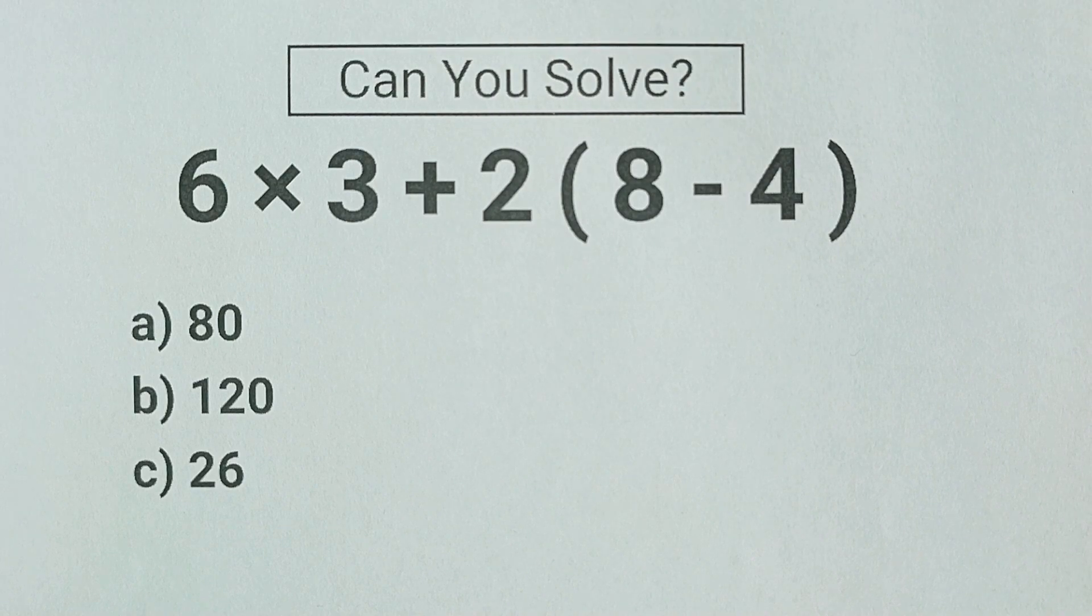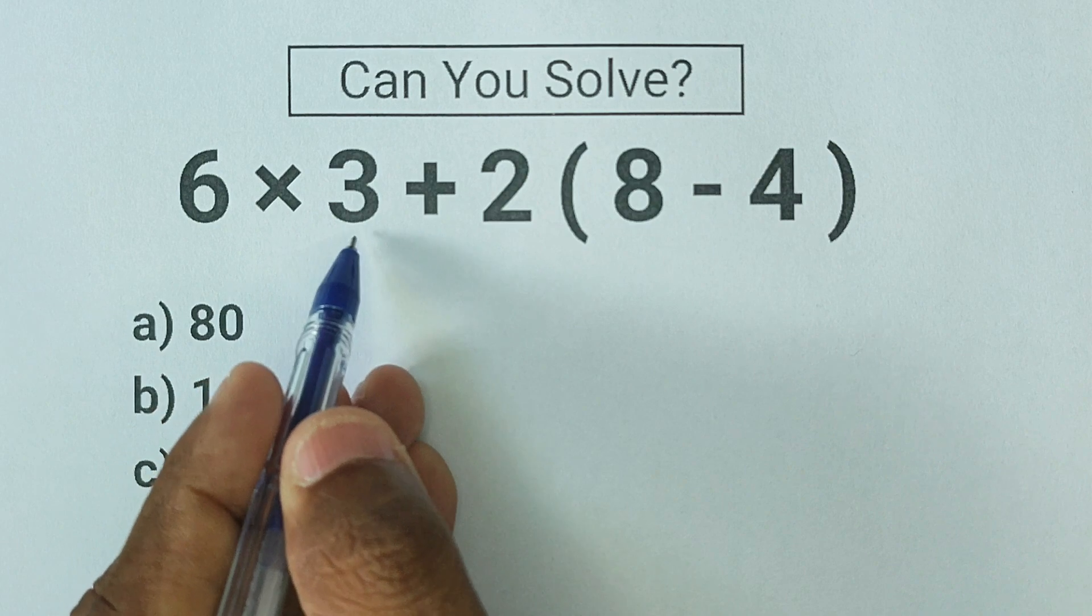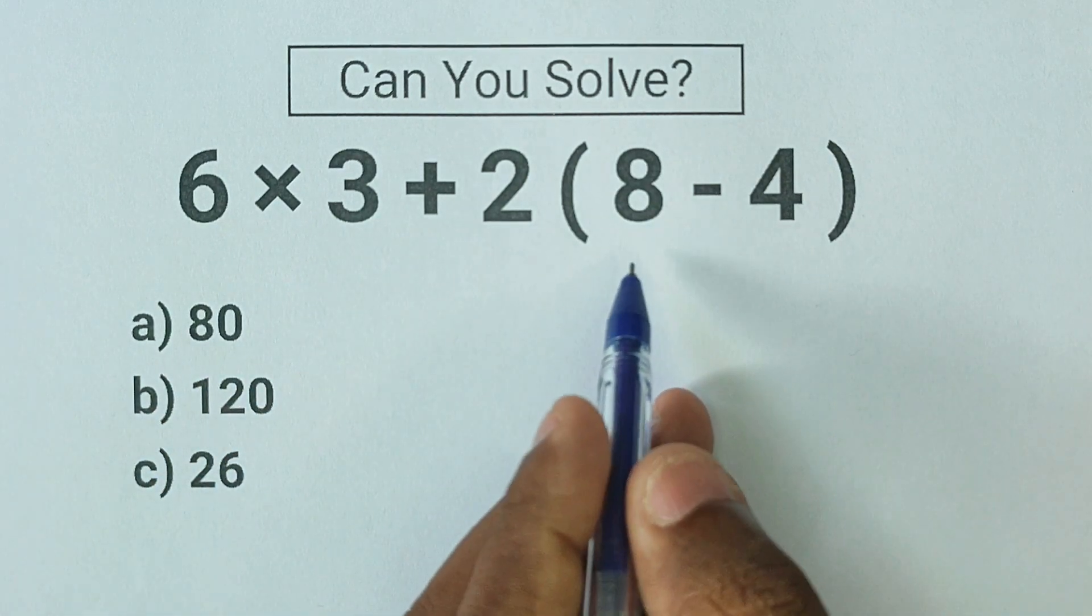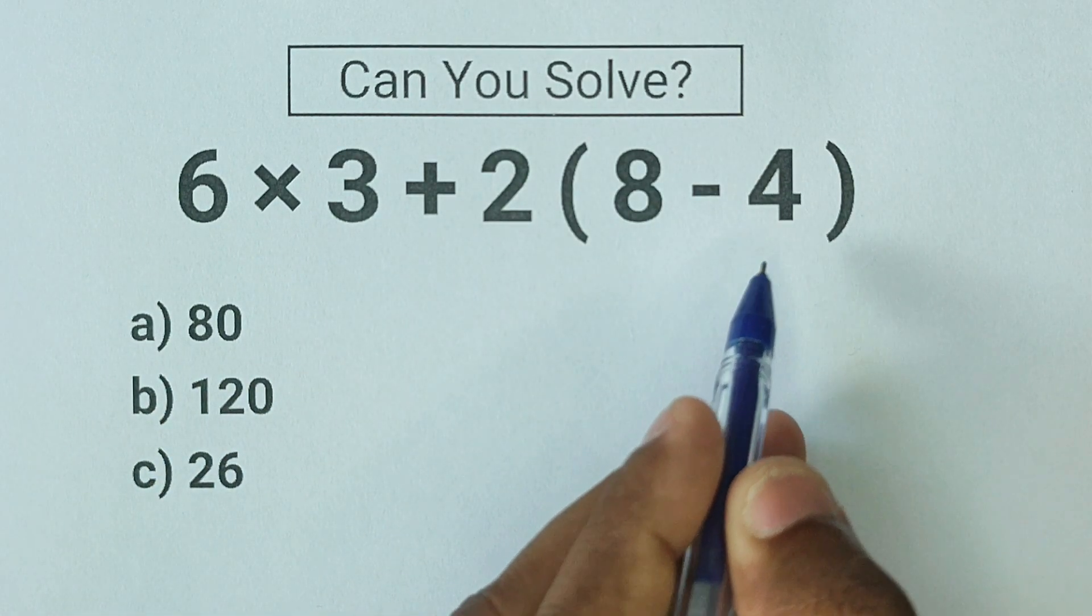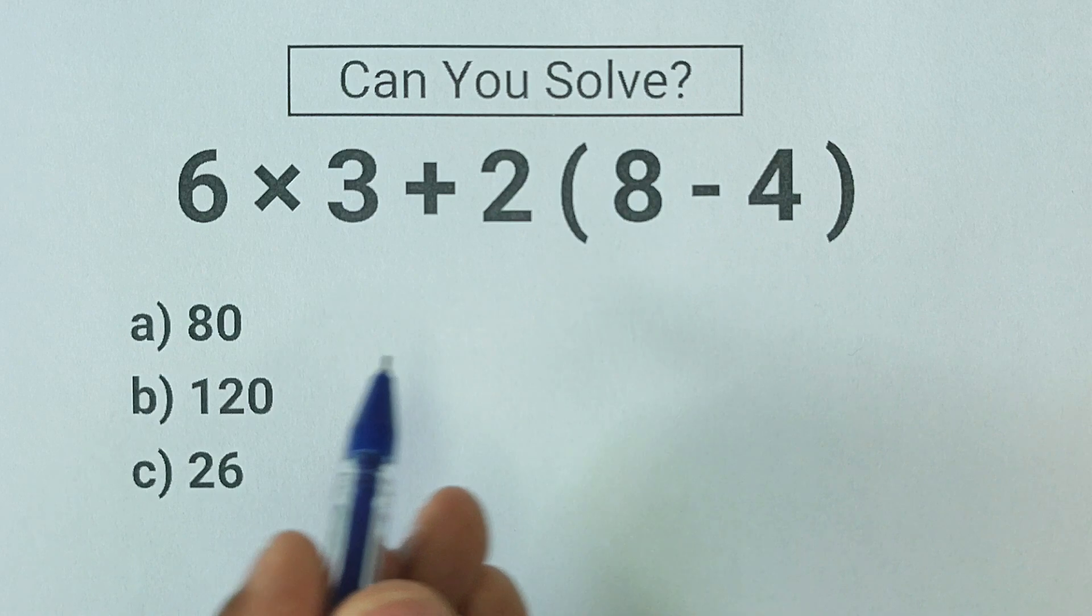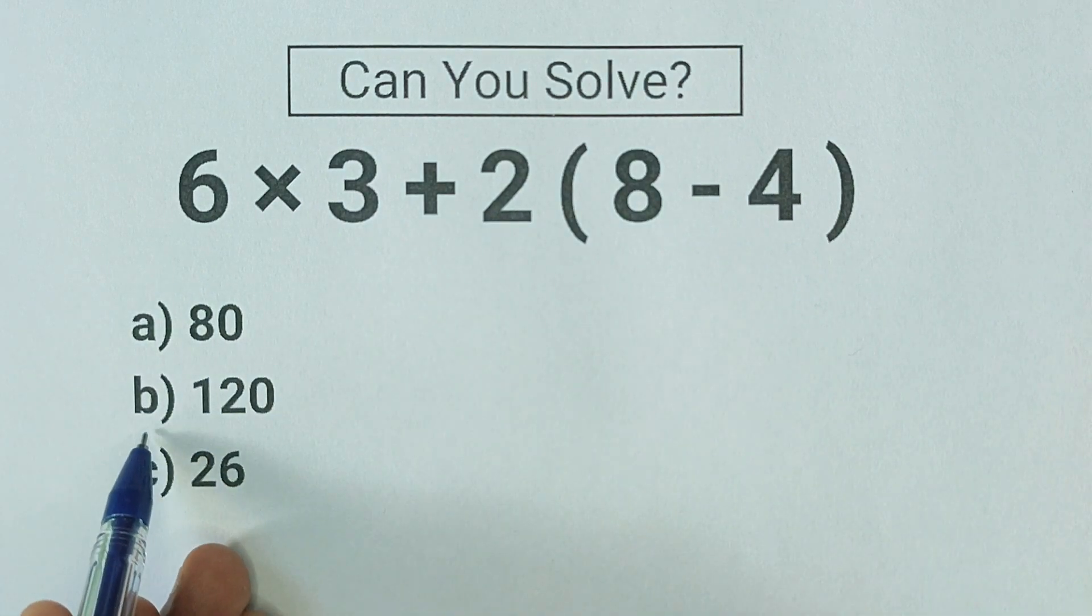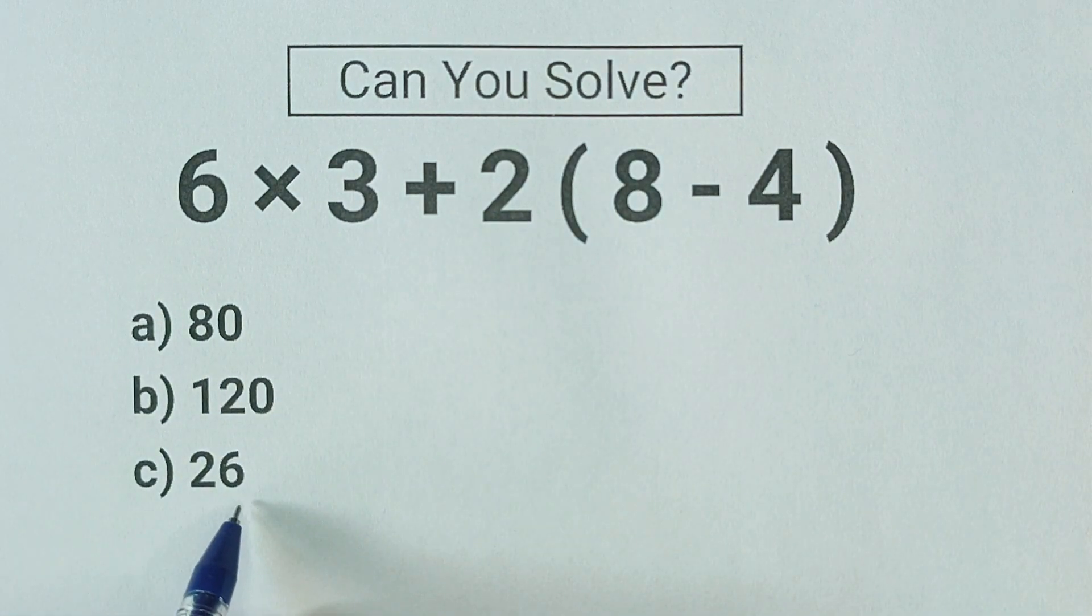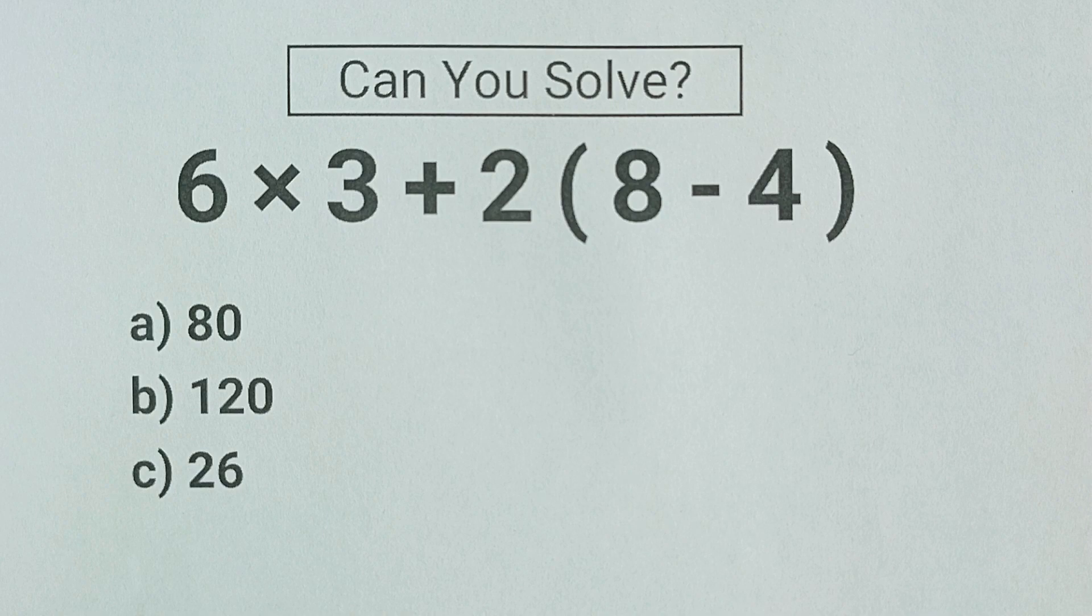Here's another basic math problem, but many people get this wrong. The problem is 6 × 3 + 2(8 - 4). Which is the correct answer? There are three options: a) 80, b) 120, c) 26. If you think you know the answer, go ahead and put it in the comment section.